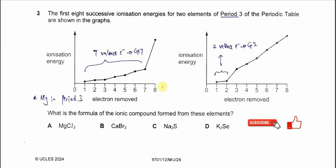Question 3: The diagram shows the first 8 successive ionization energies for two elements in Period 3 of the Periodic Table.